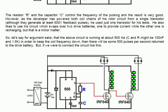That gives you mains voltage and mains frequency as an output from your little circuit. The developer has powered both coil chains of his rotor circuit from a single transistor, even though they generate at least 600 volts in feedback pulses. He used just one transistor for his tests. He also likes to use his circuit, which swaps over two drive batteries. One battery to provide current to the circuit, while the other one is recharging. But that arrangement is just a minor matter.